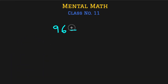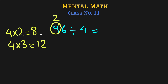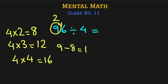Let's do another question: 96 divided by 4. We look at the first digit, 9. Since 9 is greater than 4, it can be divided. In the table of 4, 4 times 2 is 8 — close to 9 — and 4 times 3 is 12, which is too big. So we use 2, subtract 8 from 9 to get 1, bring it alongside 6 to make 16. Then 16 divided by 4 is 4, since 4 times 4 is 16. The answer is 24.